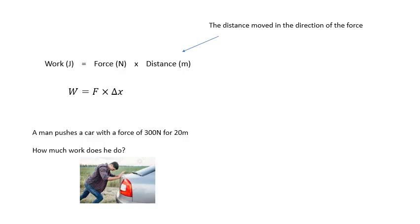Here's an example. A man pushes a car with a force of 300 newtons for 20 meters. How much work does he do? In the exam, you write down the equation: W equals F times delta x. You bung in the numbers: equals 300 times 20. Be careful with any prefixes like kilo or mega or milli or micro. In this case, it's just 300 times 20, which equals 6,000 joules or 6 kilojoules.